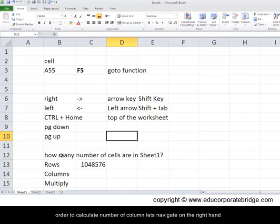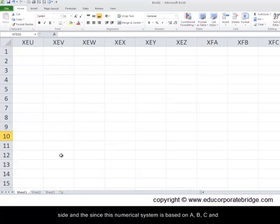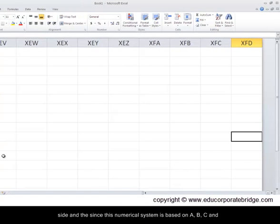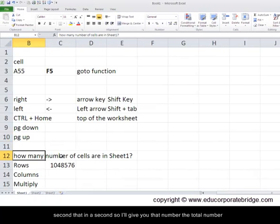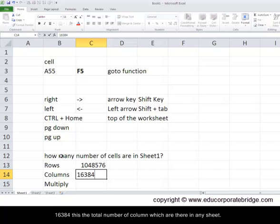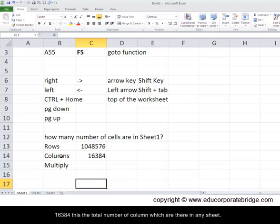In order to calculate the number of columns, let's navigate on the right hand side. And since this numerical system is based on A, B, C and the combinations of that, it may be a bit difficult to count that in a second. So I'll give you that number. The total number of columns which is there in a sheet 1 or normally there in any sheet is 16384. This is the total number of columns which are there in any sheet.